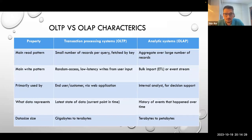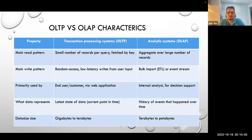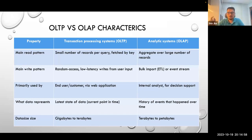If your use case mainly has read patterns for a smaller number of records per query fetched by your primary key or other indexed key, you could use a transactional database like MySQL, PostgreSQL, or Oracle. If you are looking to aggregate over a large number of records — for example, setting up a visualization showing a graph of an aggregate over a column — then you probably need an analytics database, an OLAP system.